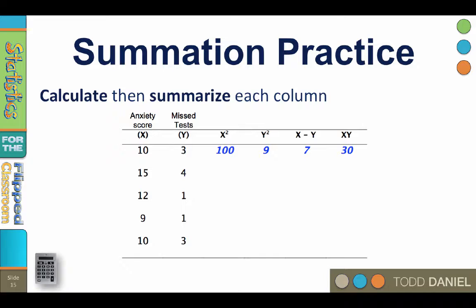Here is how the rest of the column would look. 15 squared is 225, 12 squared is 144, 9 squared is 81, and 10 squared again is 100. Now you try.